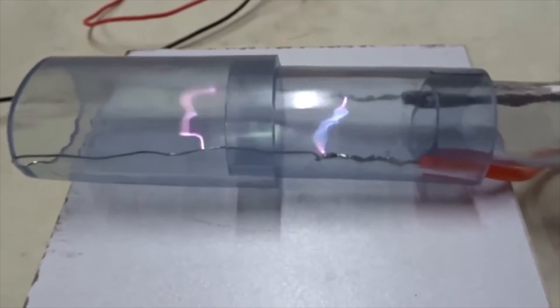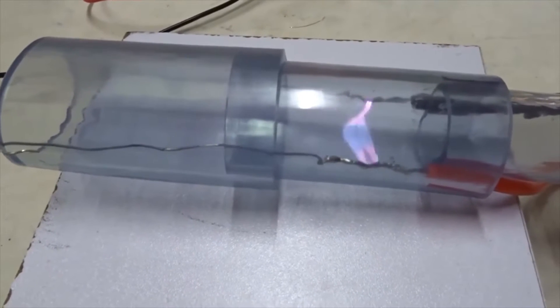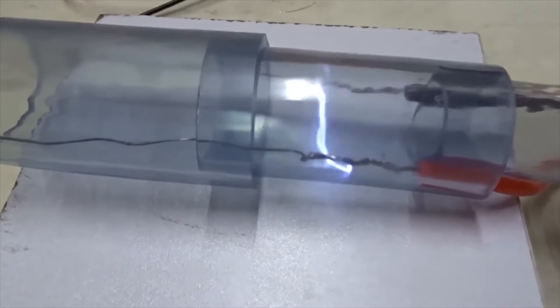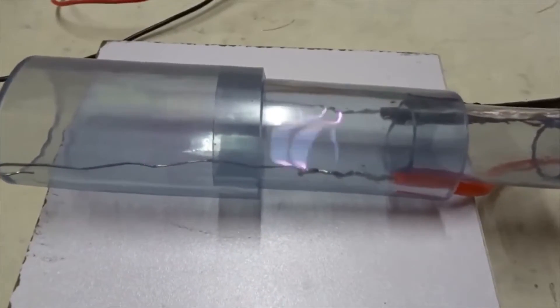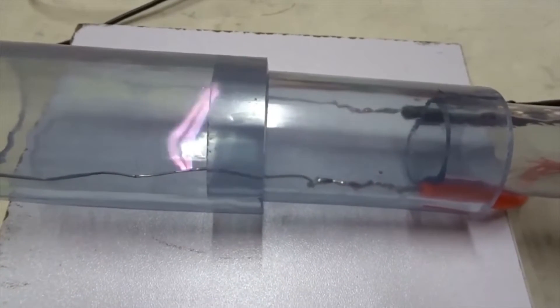We've again got a nice Jacob's ladder effect using AC power from a neon sign transformer as well as DC power. We're going to turn up the flow of argon gas. The Jacob's ladder goes way up the electrodes.